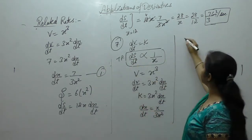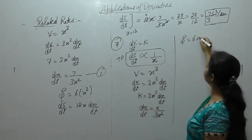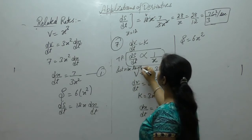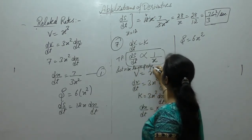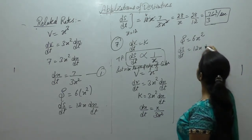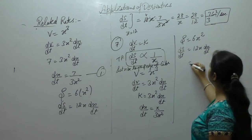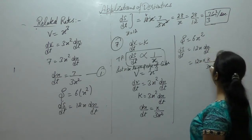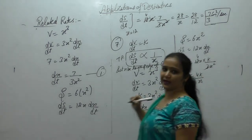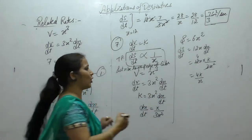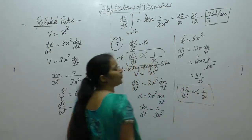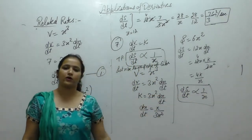Now we want to find surface area. Surface area of cube is 6 into side square. So ds upon dt equals 12x dx by dt. Substituting, 12x times k upon 3x square gives 4k upon x. Since 4k is constant, removing it gives the proportionality sign, so ds/dt is inversely proportional to the length of edge of cube.